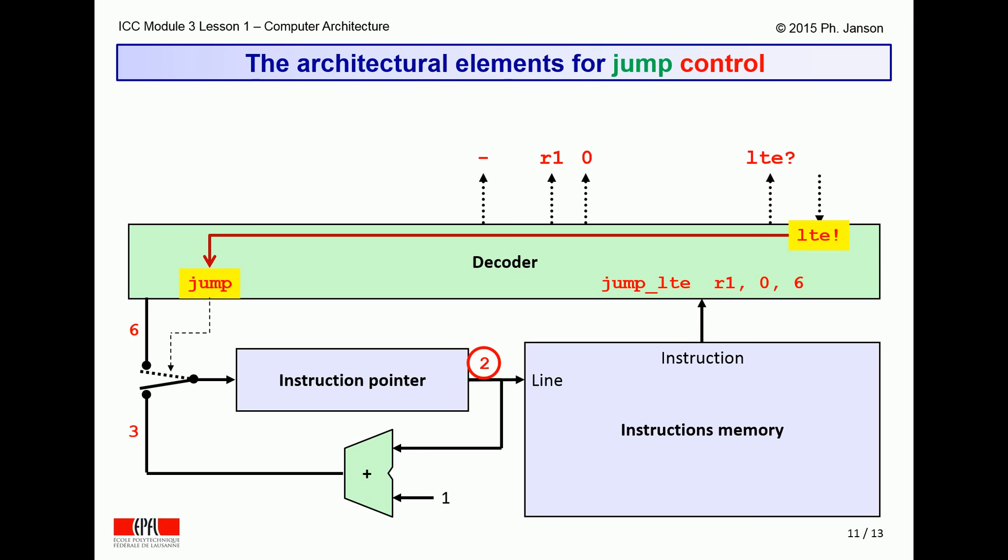If and when it does, the decoder reflects this outcome as an indication for the instruction pointer to jump to a non-sequential instruction, thus flipping the switch and thereby causing the instruction pointer input to become 6 instead of the normal 3.